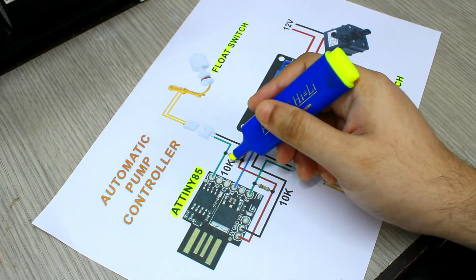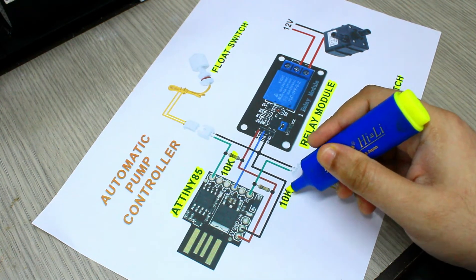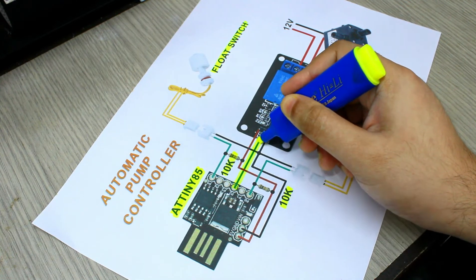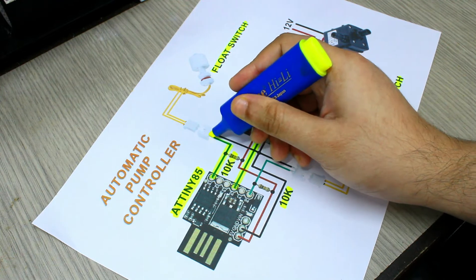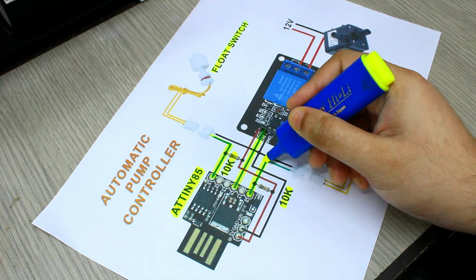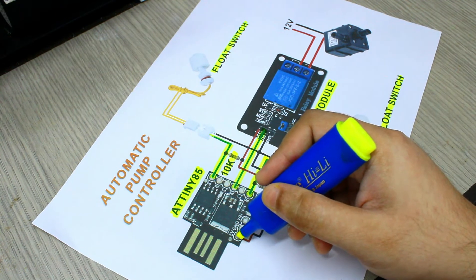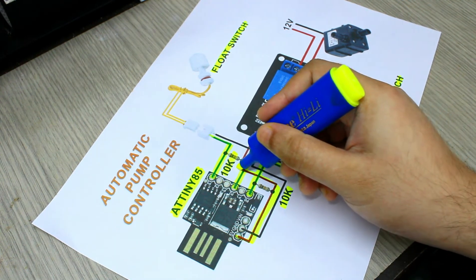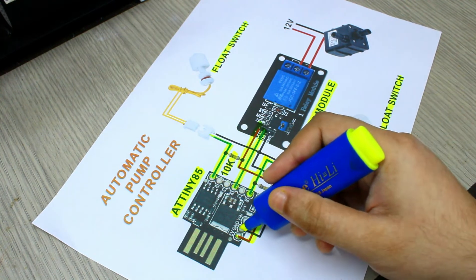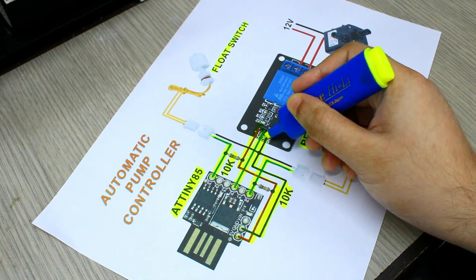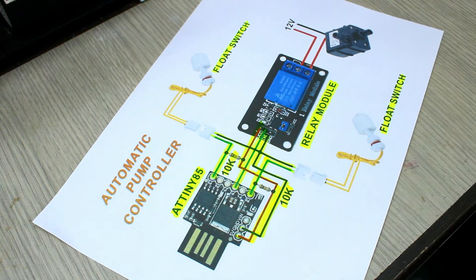10k pull up resistors are connected. Connect the P2 pin of the ATtiny module to input of the relay module. P0 and P5 pins are connected to the two float switches. 5 volt power is given to the relay board from the 5 volt pin of the ATtiny85 board, and the ground wires are connected together.